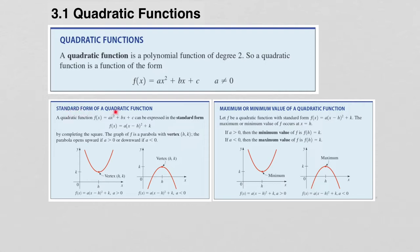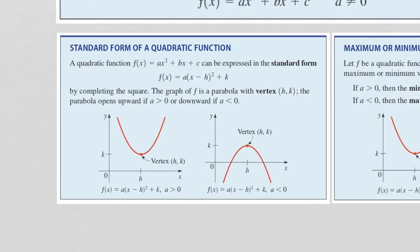Now we'll talk about the standard form of a quadratic function. Any quadratic function can be expressed in standard form. Instead of writing it in the general format, we can write it as a times the quantity (x − h)² + k. When written in this form, you can get very valuable information from the equation. It turns out the graph of a quadratic function is a parabola, and parabolas have something called a vertex. This parabola will open upward if a is positive, and downward if a is negative.